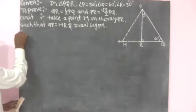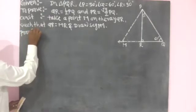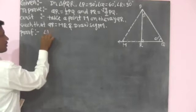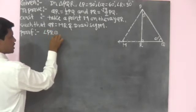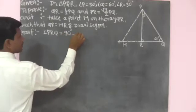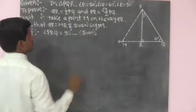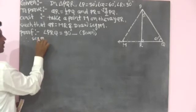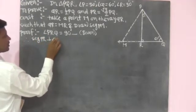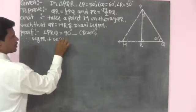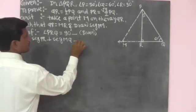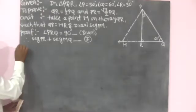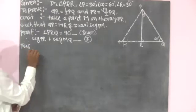Now we get the proof of the theorem. Angle PRQ is equal to 90 degrees by the given. This means segment PR is perpendicular to segment MQ. That is equation number 1.